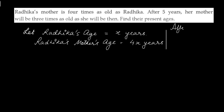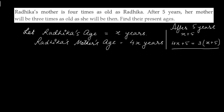After 5 years, Radhika's age will be X plus 5, and Radhika's mother's age will be 4X plus 5. The condition given to us is that her mother will be 3 times as old as she will be then. That means, 4X plus 5 is equal to 3 times of X plus 5. And this is our linear equation.